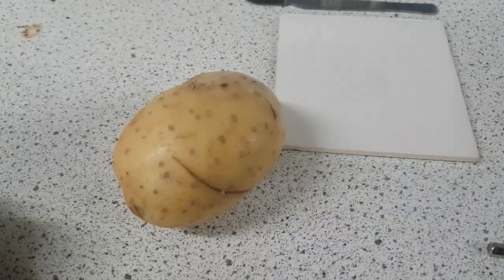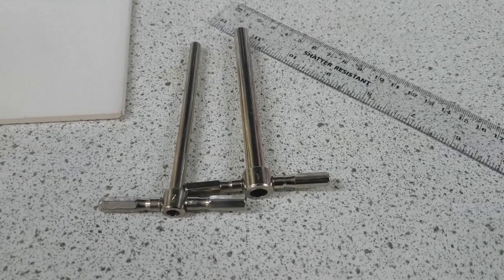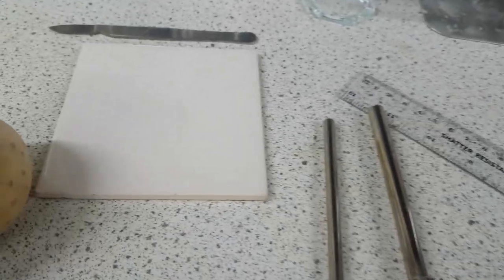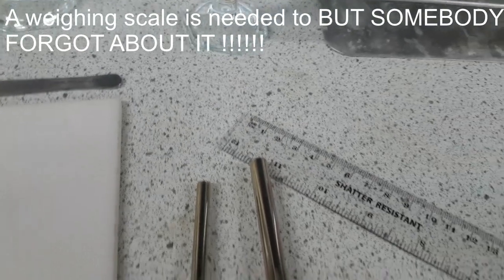Very simple experiment. For this experiment we will need the potato, cork borers—one is bigger than the other, you'll see why in a bit—a white tile, a scalpel, and a ruler.